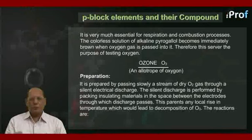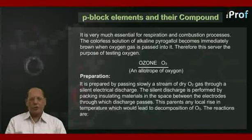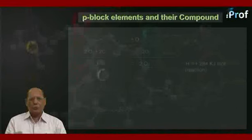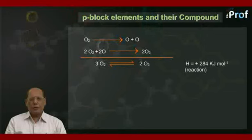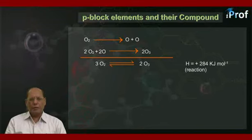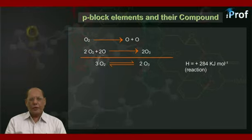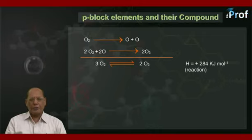This prevents any local rise in temperature which would lead to decomposition of ozone. The reactions are: O2 absorbs energy and decomposes into 2O atoms; then 2O2 + 2O combine to give 2O3. Adding these, the overall equation is 3O2 reversibly giving 2O3.